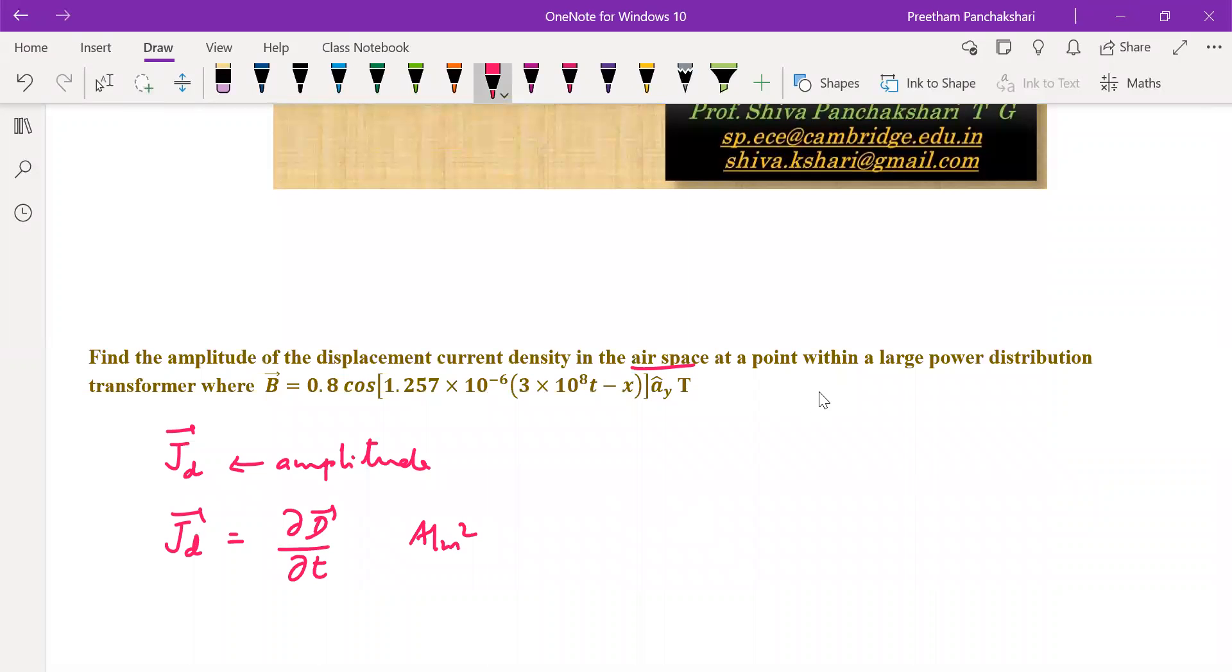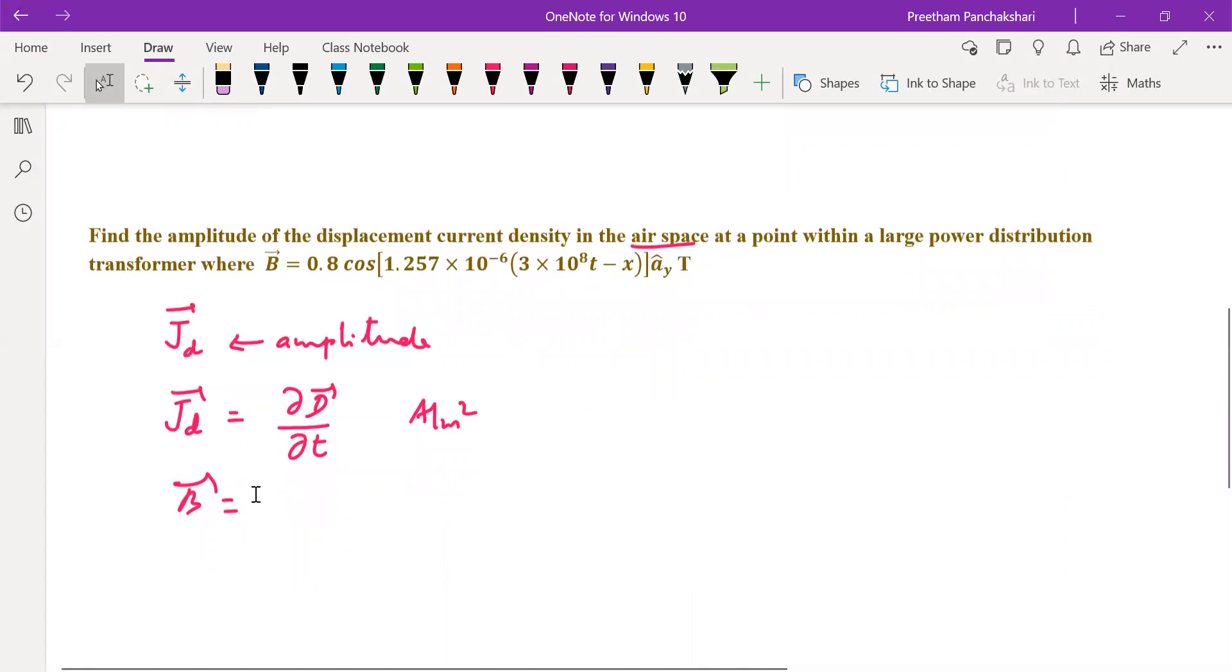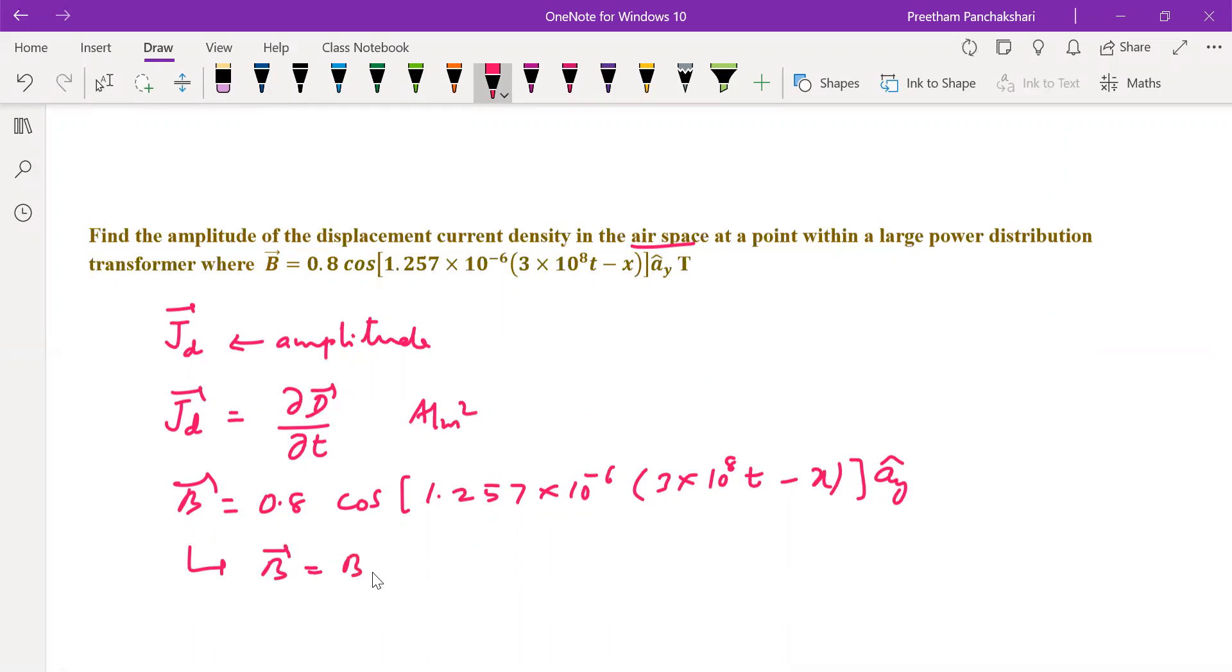The medium is airspace at a point within a larger power distribution transformer where B is given. So B is given. Knowing B, we can find Jd. It's 0.8 cos of 1.257 × 10^-6 × (3 × 10^8 t - x). This is the y component. So this can also be written as B vector having only y component.